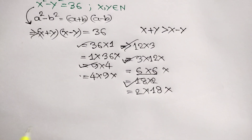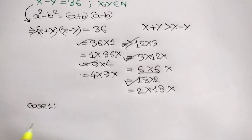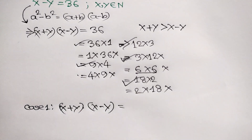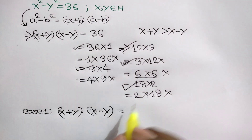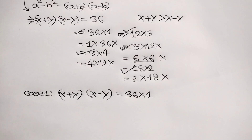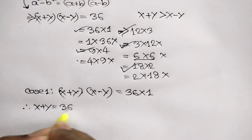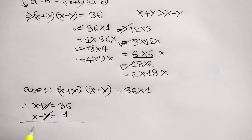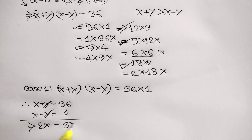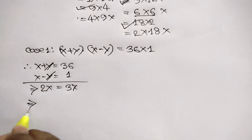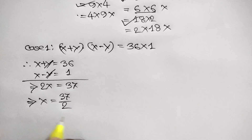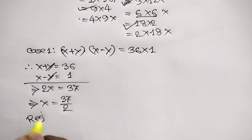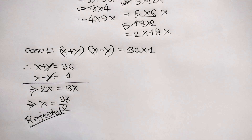Case 1: x plus y times x minus y is equal to 36 times 1. So x plus y is equal to 36 and x minus y is equal to 1. Adding these two equations, the y cancels out and we get 2x is equal to 37. Dividing both sides by 2, we get x is equal to 37 over 2, but this is not a natural number — it is a fractional number — so this case is rejected.